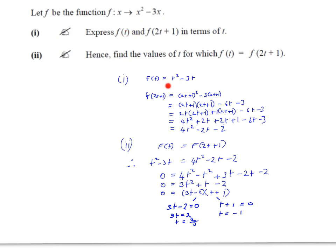So you're going to get f(t) equals instead of x squared, t squared, instead of minus 3x, minus 3t. That's all you have to do for the first part of this.